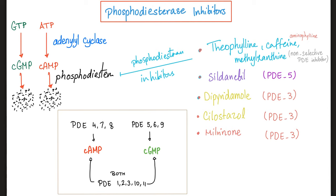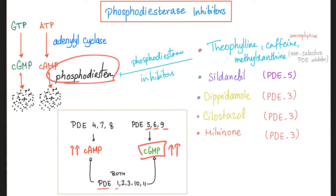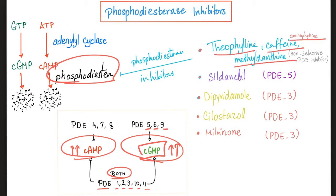However, there are many subtypes of phosphodiesterase. PDE 4, 7, and 8 specialize in boosting cyclic AMP by preventing its degradation. PDE 5, 6, and 9 specialize in cyclic GMP. PDE 1, 2, 3, 10, and 11 act on both cyclic AMP and cyclic GMP. Non-selective phosphodiesterase inhibitors include theophylline, caffeine, aminophylline, and milrinone. Sildenafil is PDE5. Dipyridamole and cilostazol are PDE3. Milrinone is PDE3.